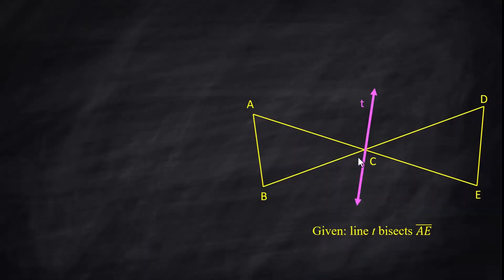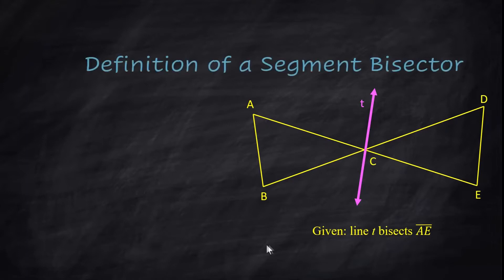And in this diagram, we are given that line T bisects segment AE. We don't know if it does BD. If it doesn't tell you, you can't assume it, but we do know it's bisecting AE. So this is the definition of a segment bisector.